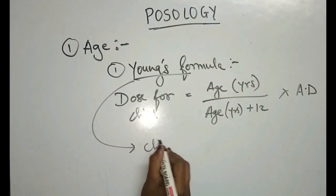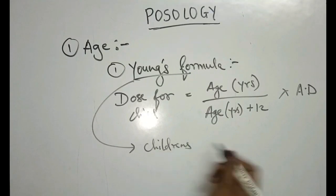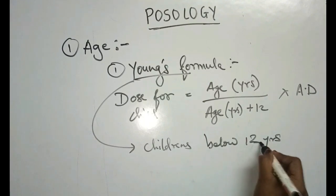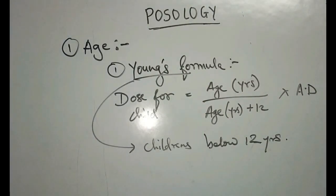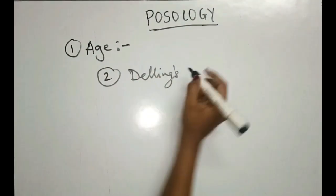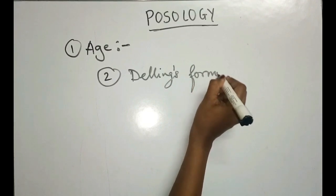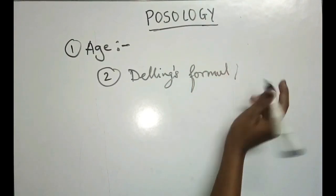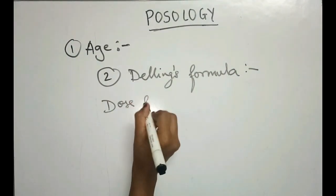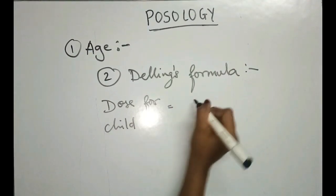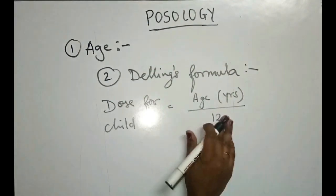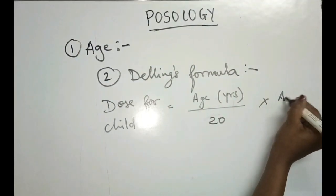This formula is used for children who are below 12 years. The second formula is Dilling's formula: dose for child is equal to age in years divided by 20, multiplied by the adult dose.